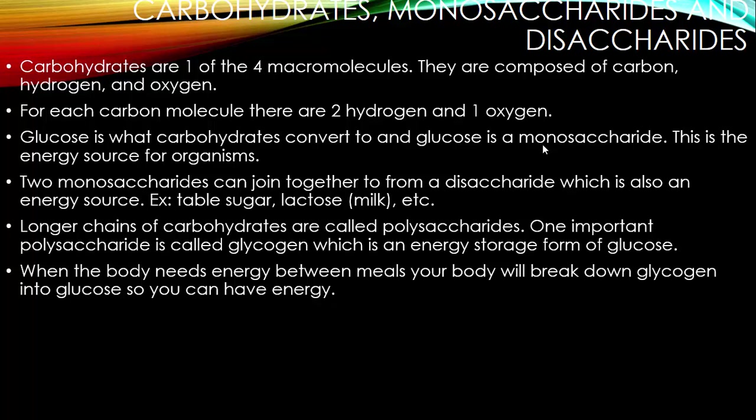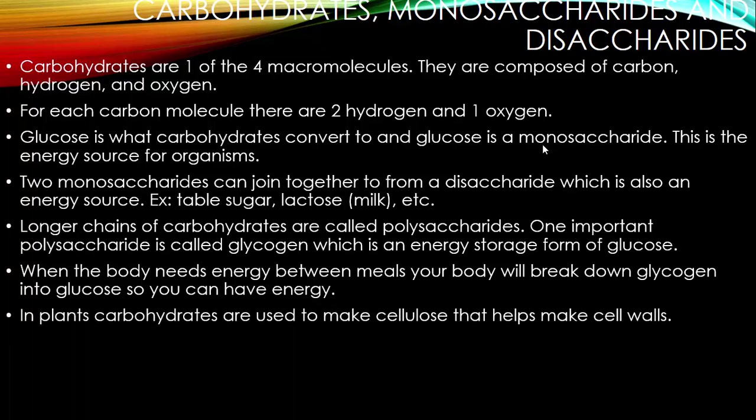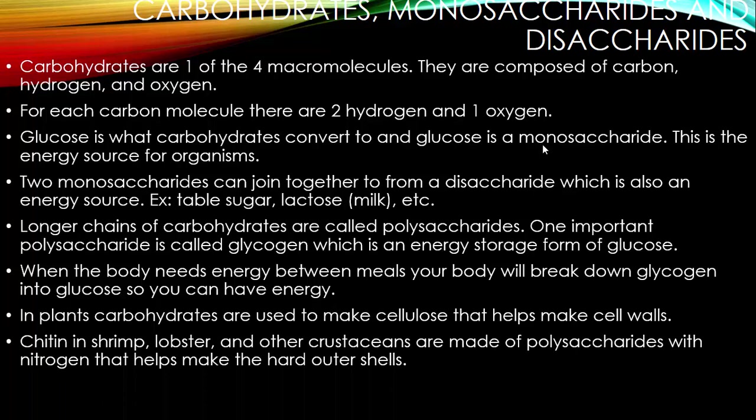Sometimes you may go a long period without food. That's no problem — your body will take glycogen stored in your body and turn it into glucose so you can have the energy you need. In plants, carbohydrates are used to make cellulose, which helps plants make their cell walls. Chitin in shrimp, lobster, and other crustaceans is made of polysaccharides with nitrogen that helps make their hard outer shells.